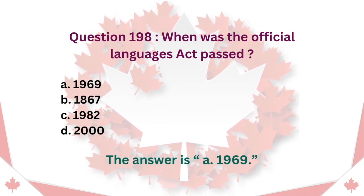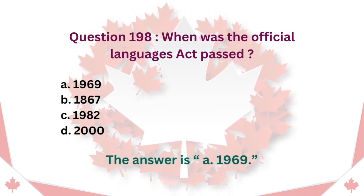Question 198: When was the Official Languages Act passed? A. 1969. B. 1867. C. 1982. D. 2000. The answer is A. 1969.